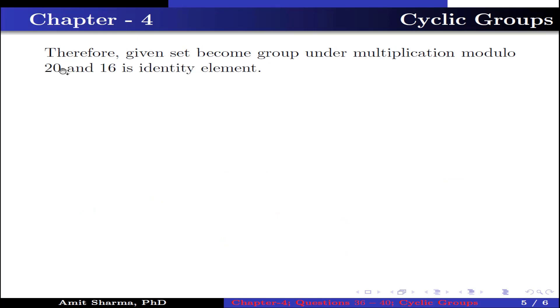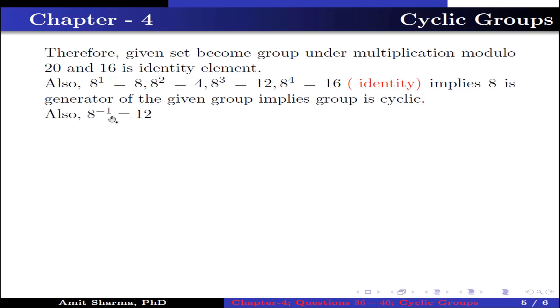Also from the table we conclude that 16 is the identity element, because every element when operated with 16 gives the same element itself. Also 8¹ = 8, 8² = 4, 8³ = 12, 8⁴ = 16 under multiplication modulo 20, which is the identity element. This implies all the elements are generated by 8, so it is the generator of the given group, implying the group is cyclic. Also 8⁻¹ = 12, which implies 12 is also a generator of the given group.